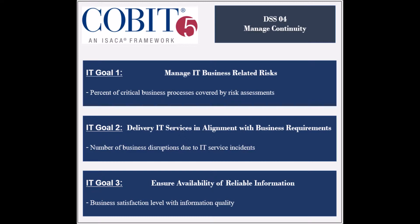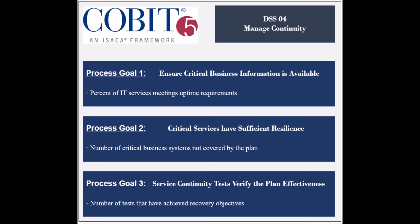The second supported goal is to ensure that the delivery of IT services is aligned with the business requirements. Its achievement is measured by the number of business disruptions due to IT service incidents, and by the user satisfaction level with the quality of IT service delivery. The third goal is to ensure the availability of useful information for decision-making. Its achievement is measured by the business satisfaction level with the quality of information, and by the number of business incidents caused by the lack of information.